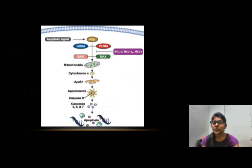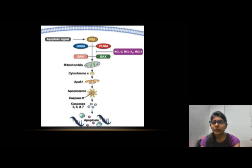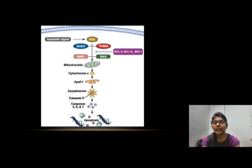Now we will understand the process of apoptosis through a diagram. When ATM and CHK release signals, they generate protein P53, which releases NOXA and PUMA, and creates BAX protein. BAX protein makes holes on the surface of the mitochondria and releases cytochrome C from inside the mitochondria. This activates Apaf-1 protein, which forms the apoptosome and starts the cascade reaction. Procaspase-9 is broken into Caspase-9, and Procaspase-3 is broken into active Caspase-3, which initiates the process of apoptosis.